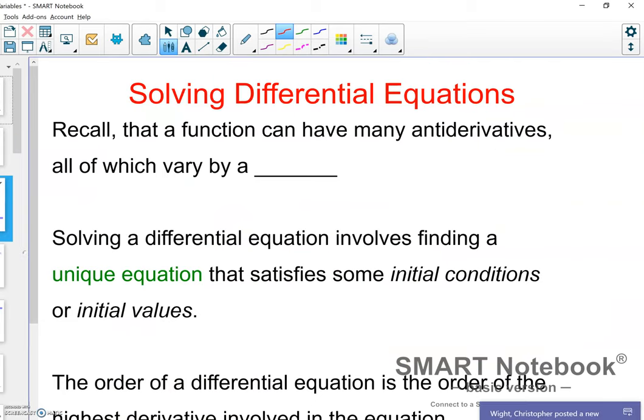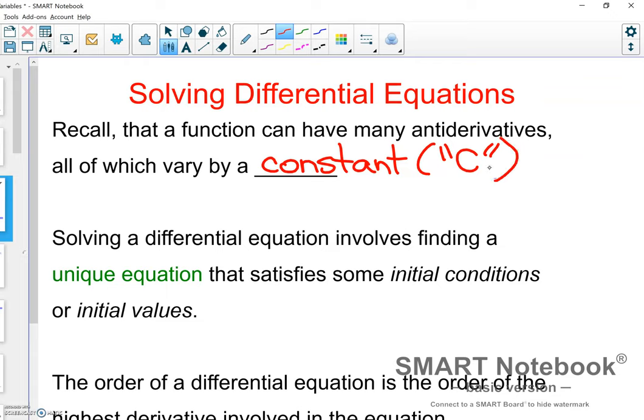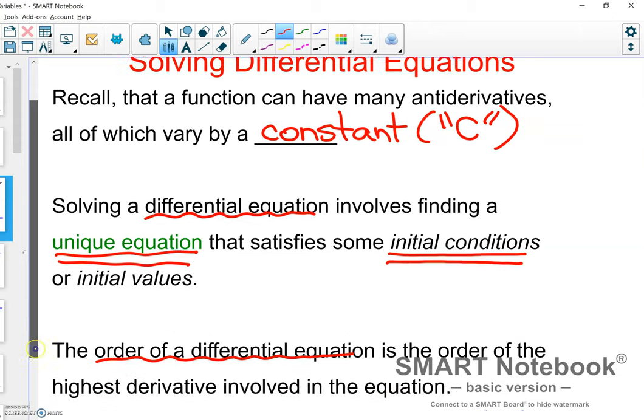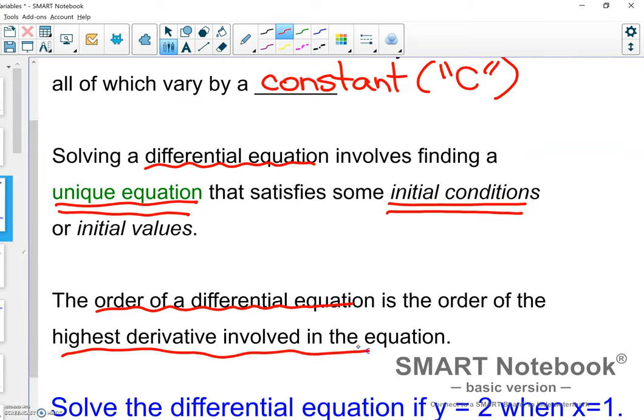So, if we're solving a differential equation, recall that a function can have many antiderivatives, but they all vary by some constant. Or, we've been labeling that constant c. That would be the general solution. Now, when we solve a differential equation, we want to find a unique equation that makes both the differential equation true and some other initial condition. And just a tip, the order of a differential equation, just like our normal equations that we learn from Algebra 1, we always will go from the highest derivative involved in the equation to the lowest.